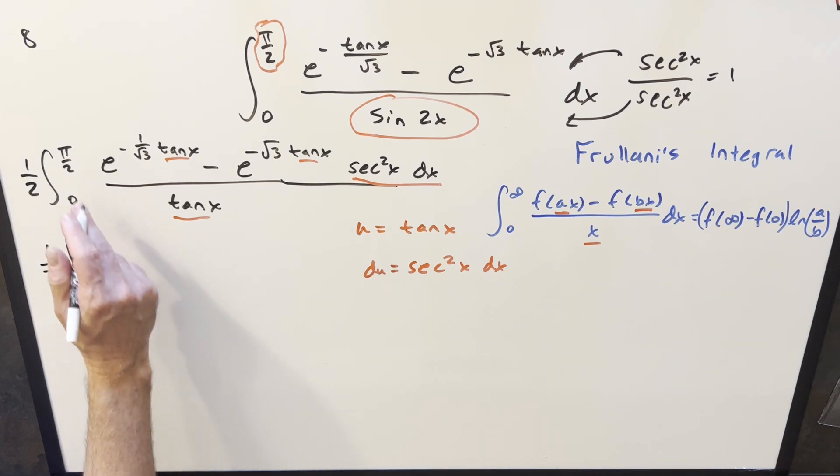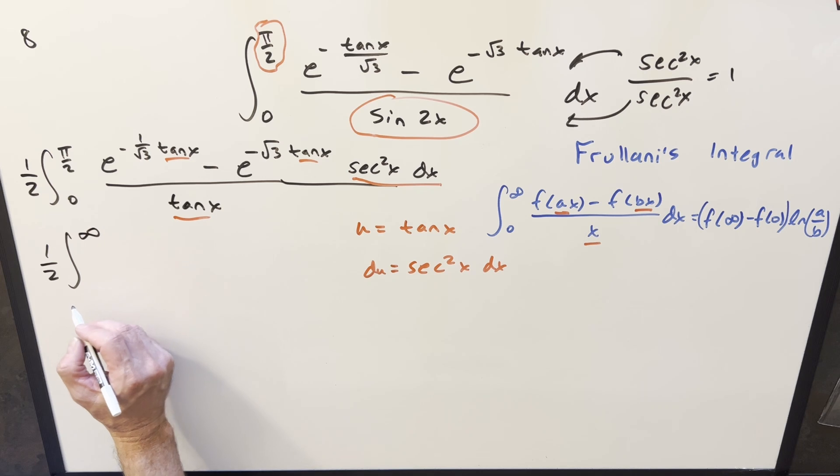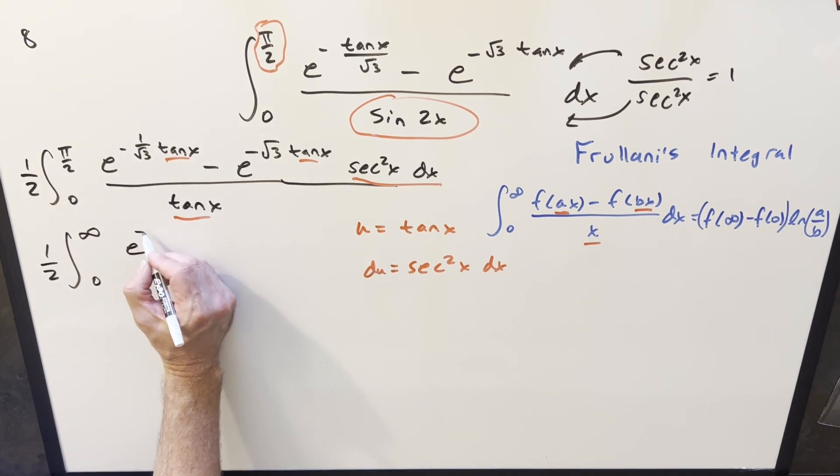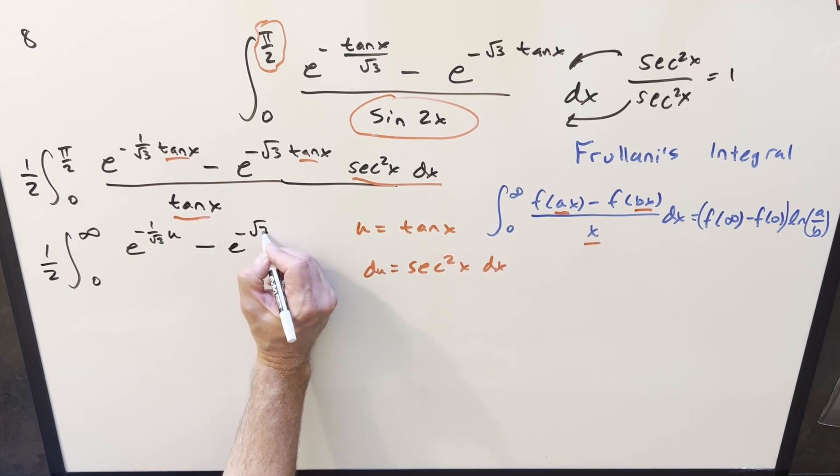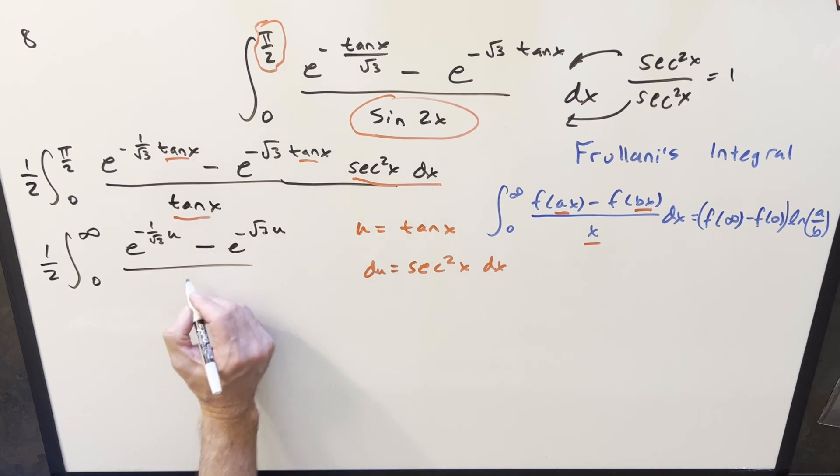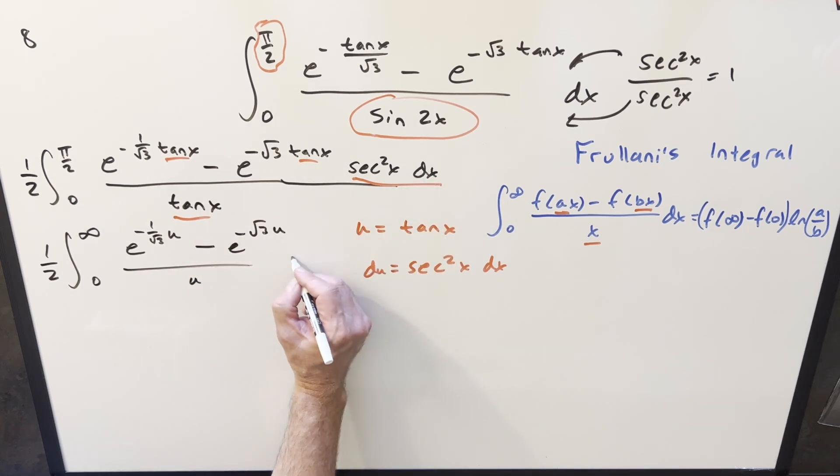Now we have the 1 half. Plug in pi over 2 here. Tan of pi over 2 is infinity. And then plug in 0. Tan of 0 is just 0. Then, rewriting the numerator, we're going to have e minus 1 over the square root of 3. Now this is just a u. This one, e minus the square root of 3, u. Denominator just becomes u, and all this stuff over here is just a du.